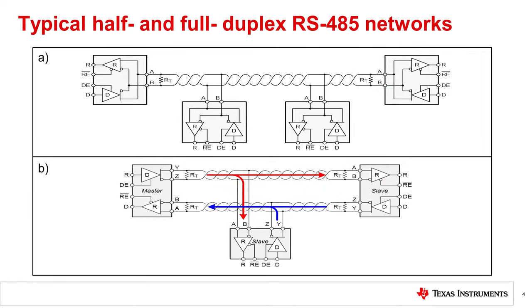An RS-485 bus consists of multiple transceivers connected in parallel to a bus cable. To eliminate line reflections, each cable end is terminated with a termination resistor, denoted as RT, whose value matches the characteristic impedance, denoted as Z0, of the cable. This method, known as parallel termination, allows for higher data rates for longer cable lengths.